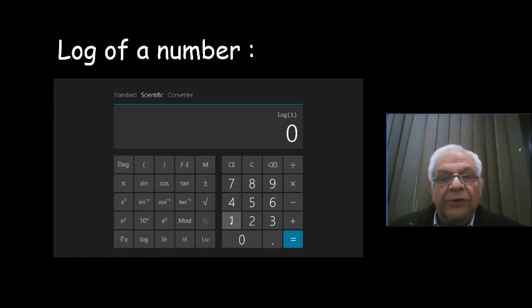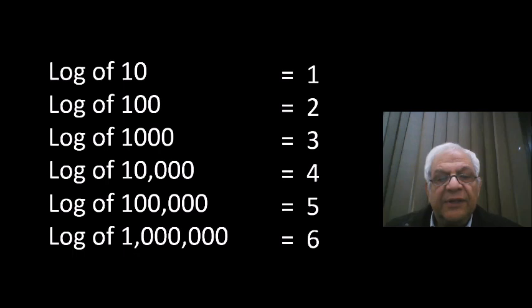If you have a calculator and you ask for log of 10, it is 1. Log of 100 is 2. Log of 100,000 is 5. As you notice here, the number of zeros equals the log.